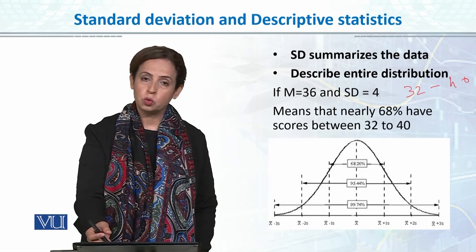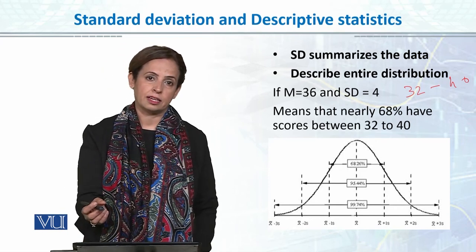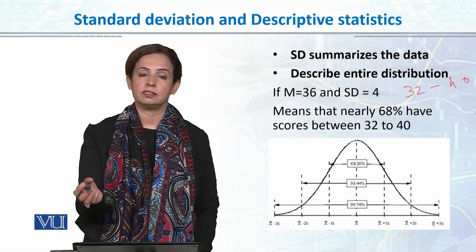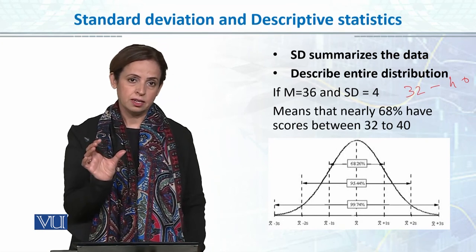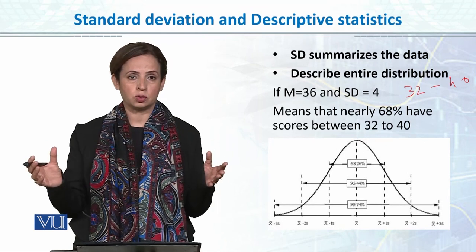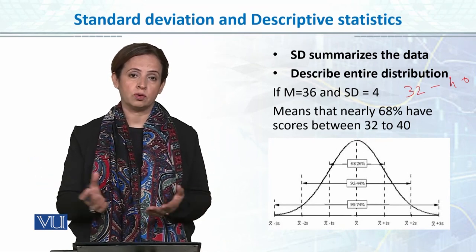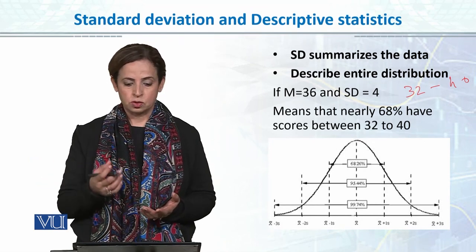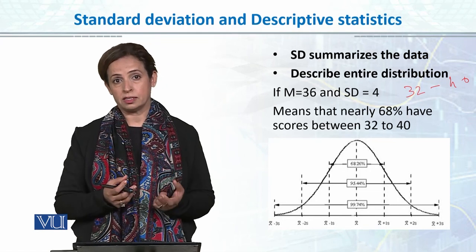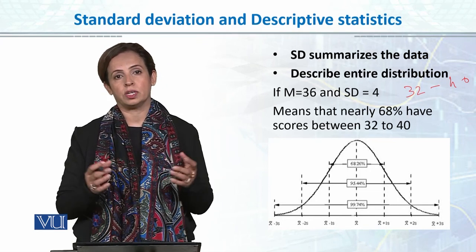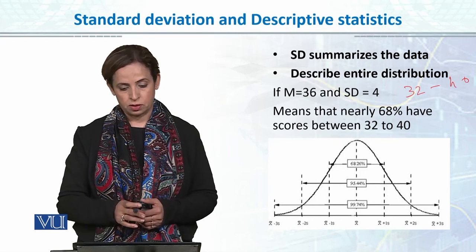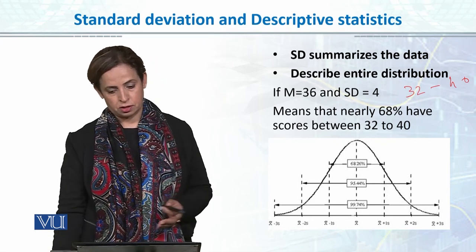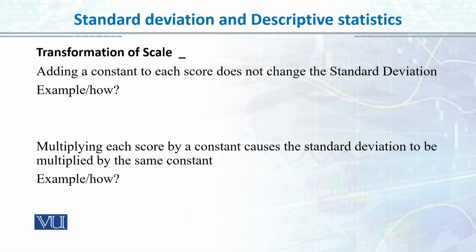And if we go to two standard deviations, we can tell that 95% of the class, 95% of the population, they are between those two scores. This is how it not only summarizes the data but actually gives you entire information about the distribution of the scores.